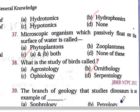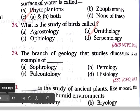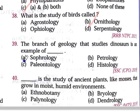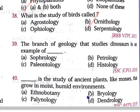Question number 39: The branch of zoology that studies dinosaurs is an example of — option A sophrology, option B petrology, option C paleontology, option D histology. Option C is correct — paleontology.